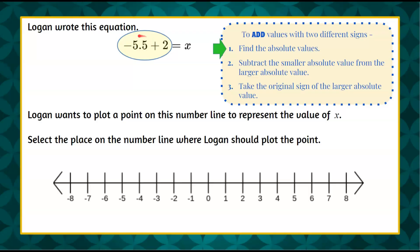So the absolute value of negative 5 and 1 half is positive 5 and 1 half. Then the absolute value of positive 2 is also positive 2.